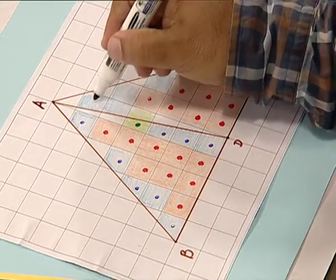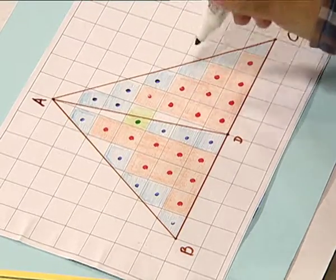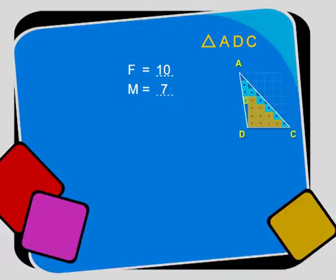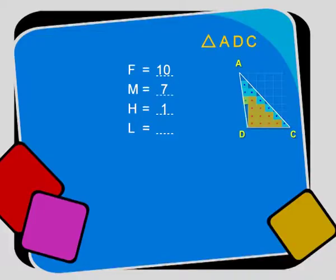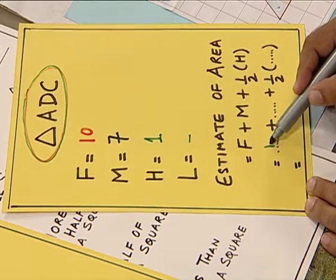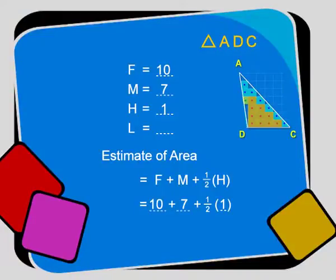Next we find the squares which are more than half filled, represented by a blue dot — 1, 2, 3, 4, 5, 6, 7. These are 7 in number. Similarly, we find the squares which are exactly half filled — there is one such square, so the value of H is 1. The remaining squares are less than half filled, which we ignore. Substituting these values in the formula, we get 10 + 7 + half of 1, which comes out to be 17 and a half square units.